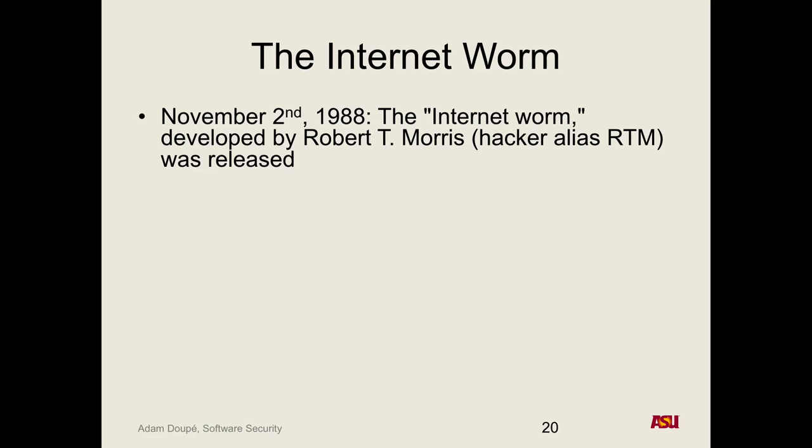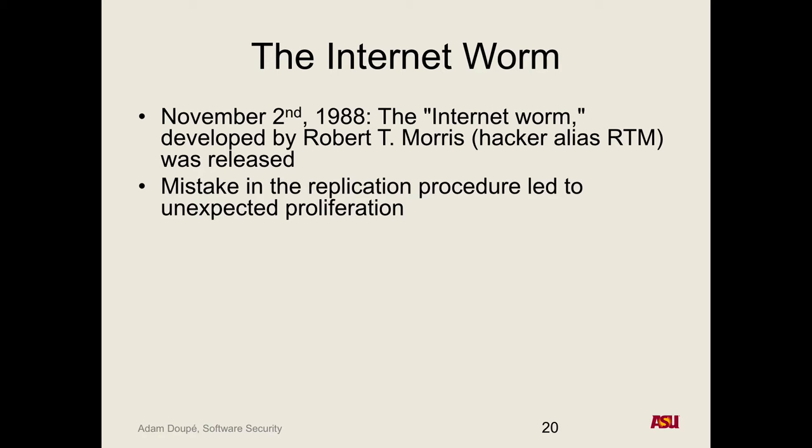There's debate about whether Morris deliberately did this or whether it was accidental. The mistake was in the replication procedure — when you scan other systems, if you've already exploited one, why retake it? He had a bug checking for that, so machines would continually get reinfected. On systems with very limited CPU and memory, running 10, 15, or 20 copies of the worm program would bring the computer to a grinding halt and nothing could happen.